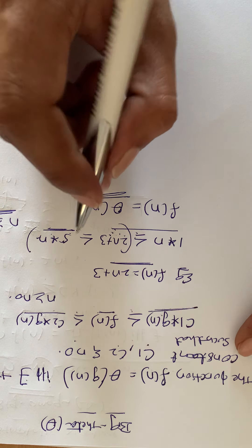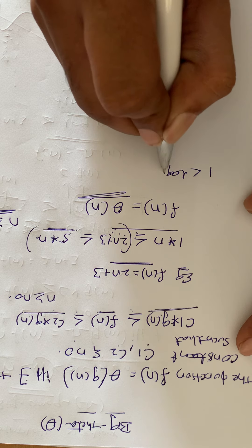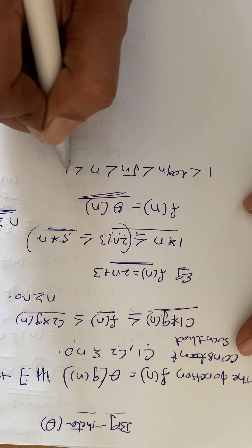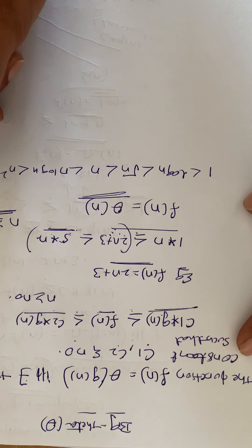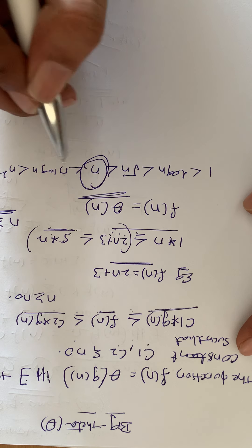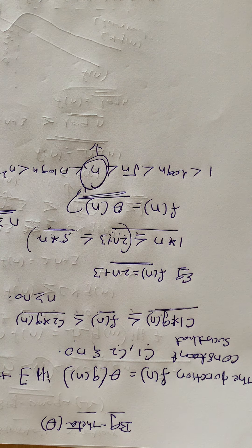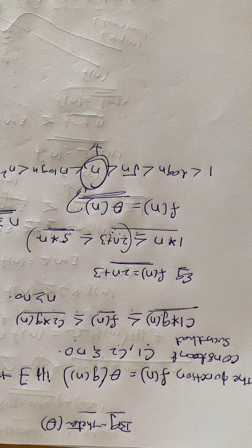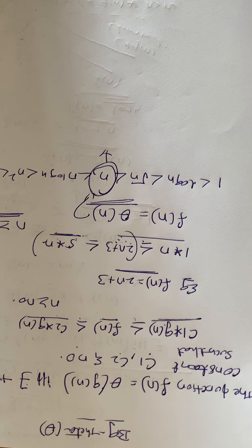From the expression 1 < log n < √n < n < n log n < n² < n³ and so on, the average bound is n. So Θ(2n + 3) gives us n only. Finally, f(n) = Θ(n), where n indicates the average bound. Now let's discuss the graph of Big Theta.